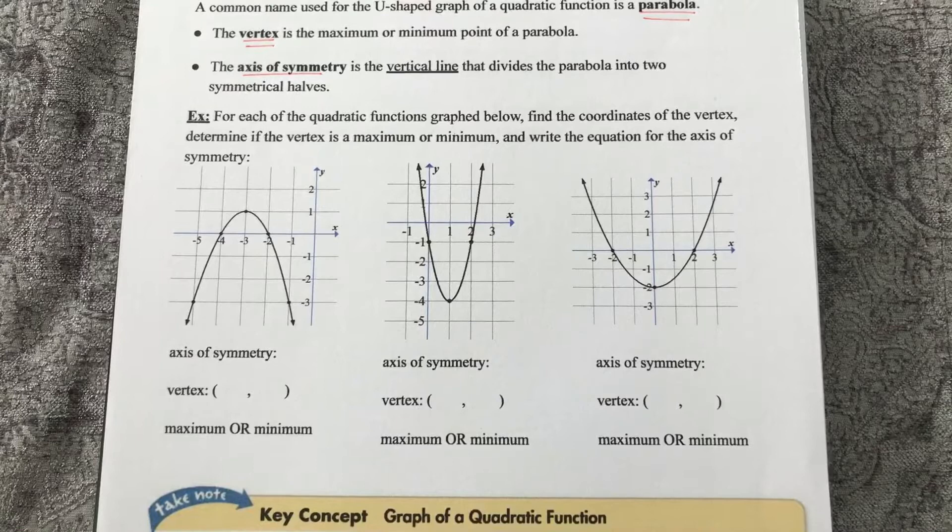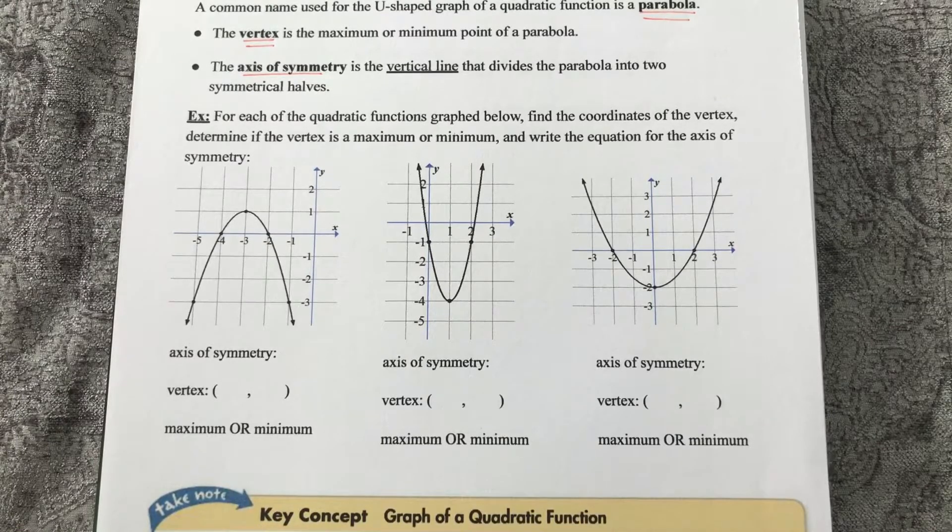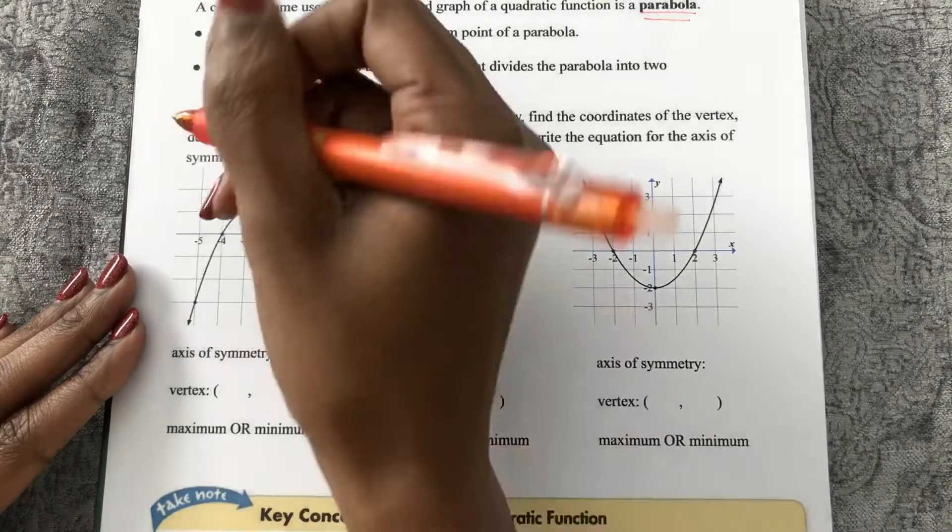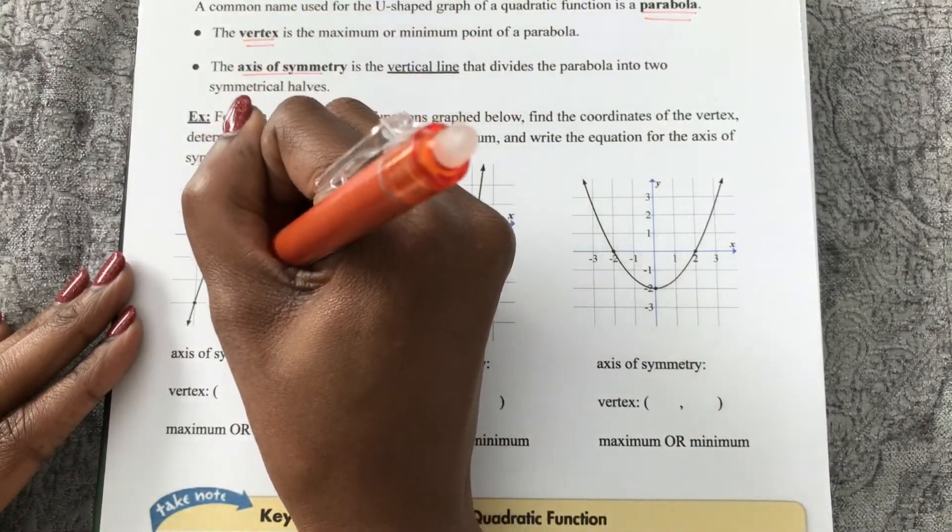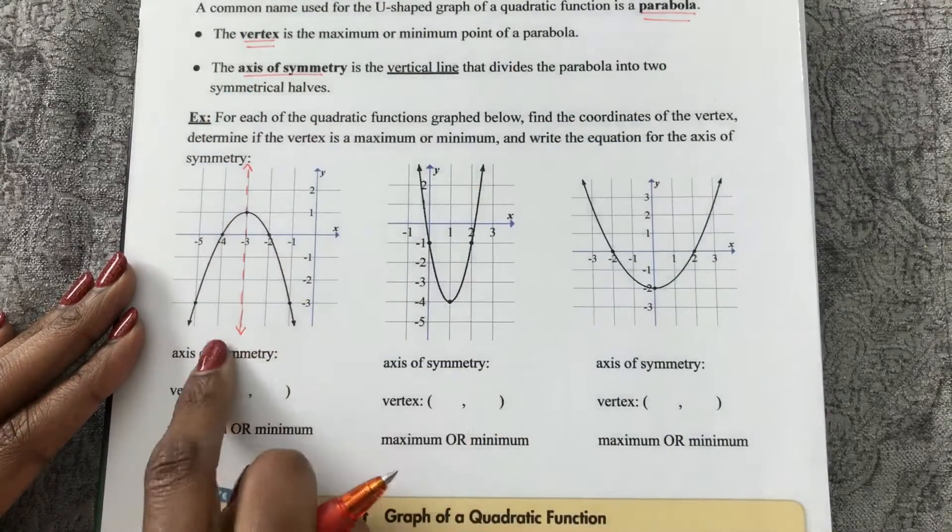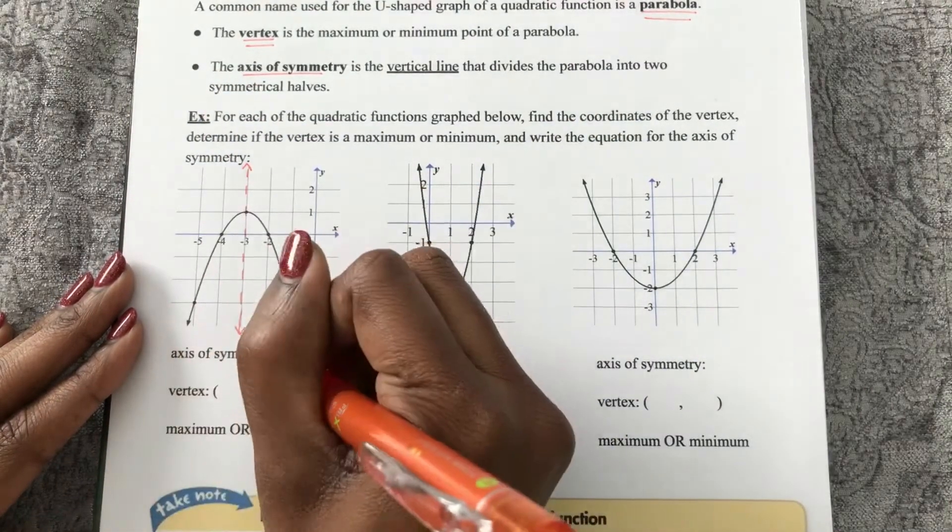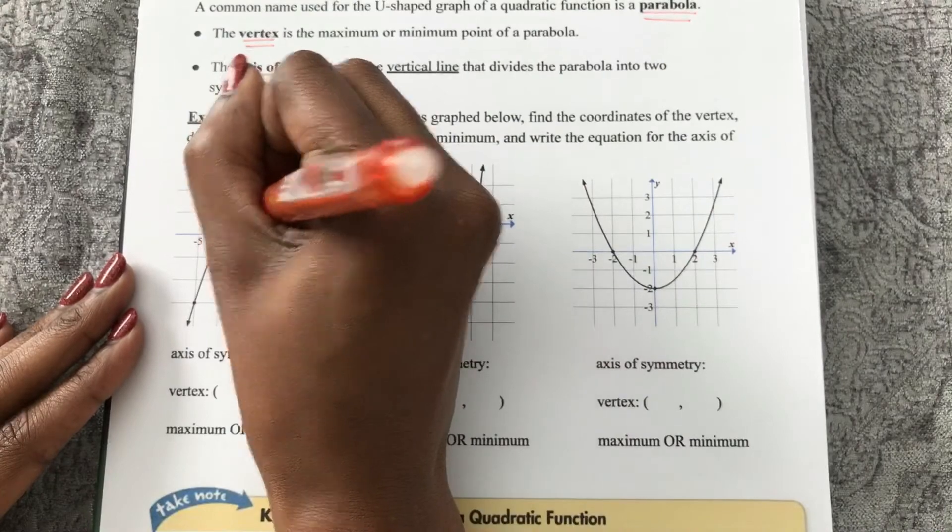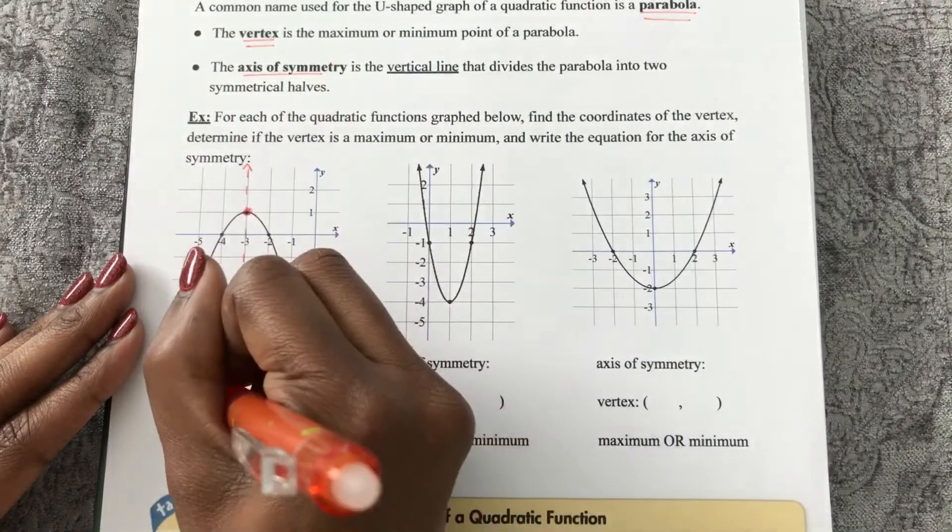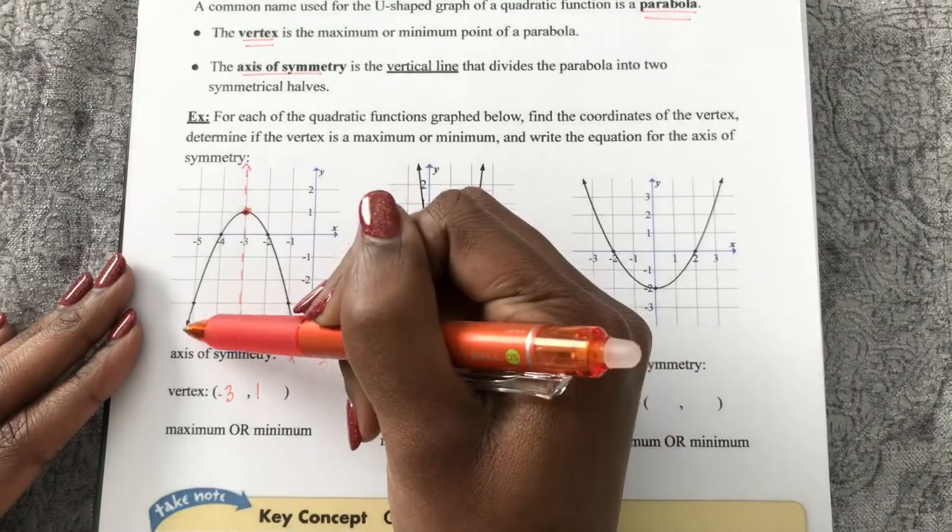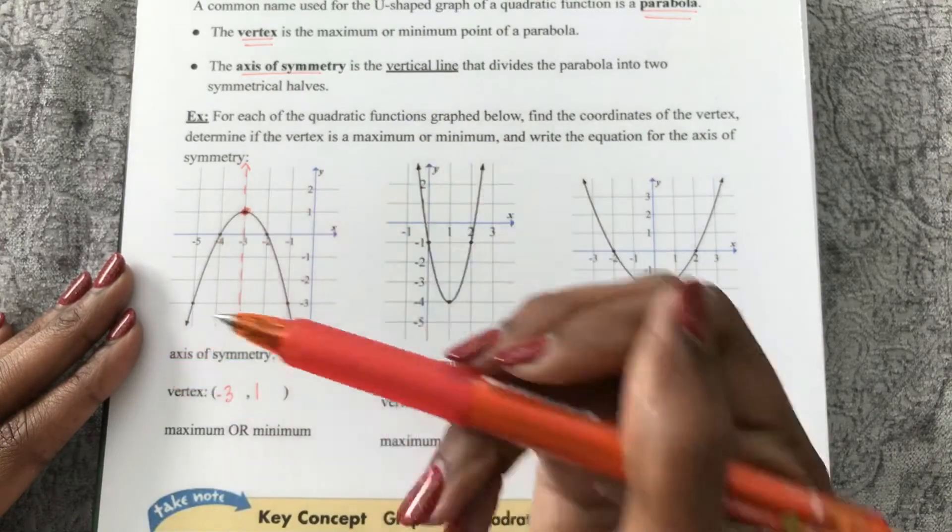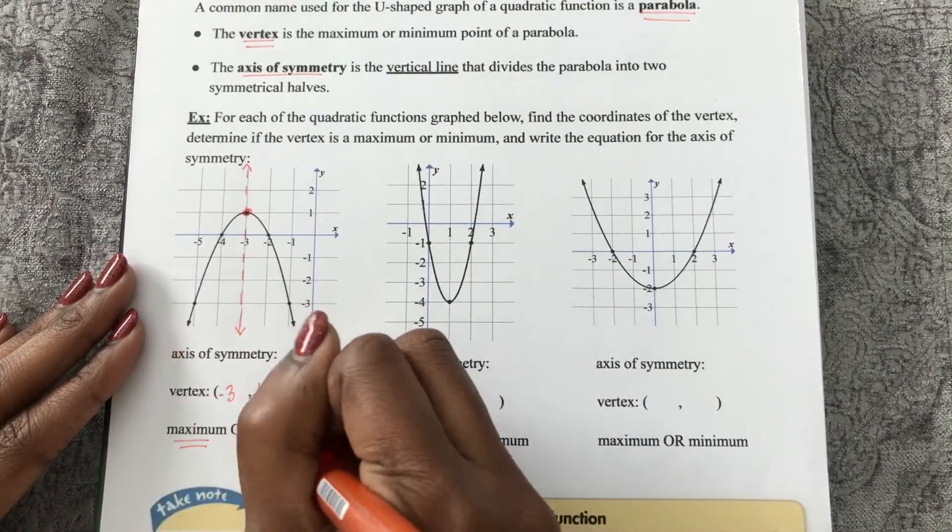We want to find the coordinates of the vertex, determine if the vertex is a maximum or a minimum, and write the equation for the axis of symmetry. So the first thing I see is the line of symmetry that cuts through this parabola in half, and the equation of this vertical line is x equals negative 3. It is going right through our vertex, which is the point negative 3, 1, and I can see that that vertex is the highest y value. All y values go down from here, so that's a maximum vertex, not a minimum.